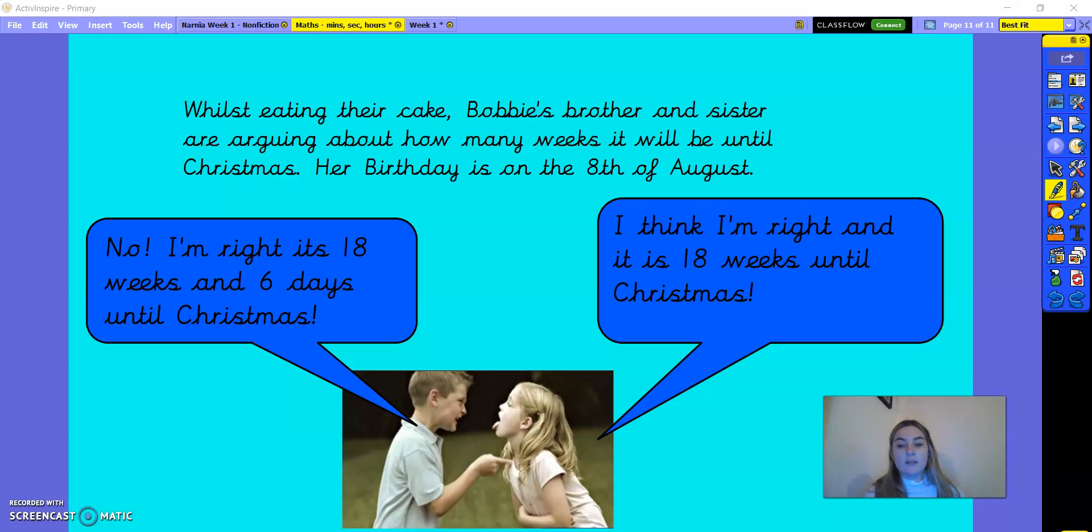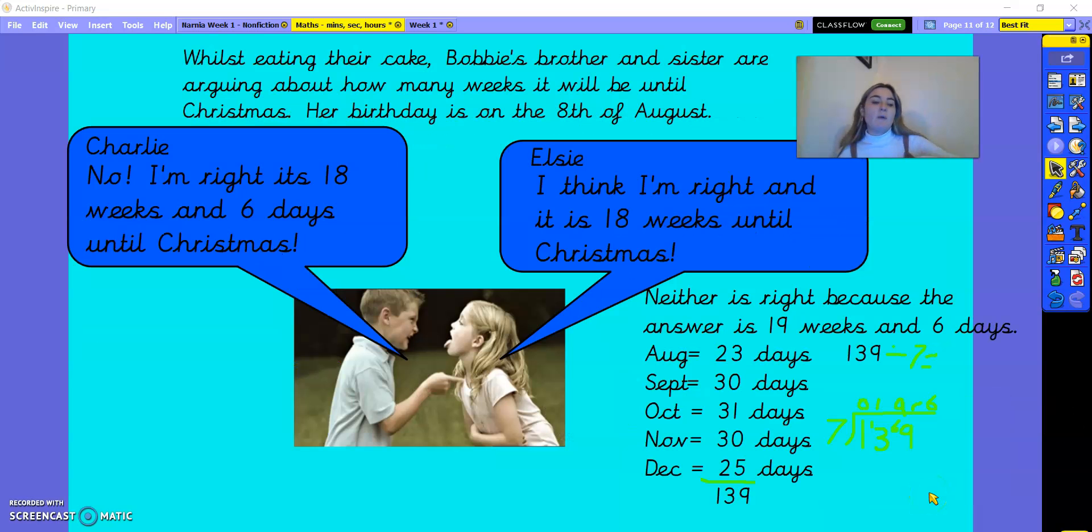So far, we are on to our last question. If you'd like to pause now, and then we can have a look at it together after. Okay, so on this last one, I have shown my workings out. So I worked out how many days were in each month. So there's 28, 23 days left in August. And then I counted up how many days there were left until Christmas through each month. I then got 139 days. And I divided that by seven to find out how many weeks there would be. And I got 19 weeks, remained at six. So 19 weeks and six days. And I used the bus stop method to help me do that.